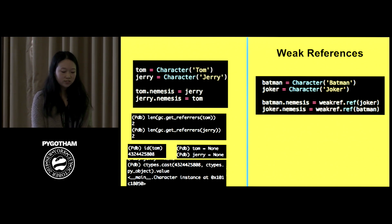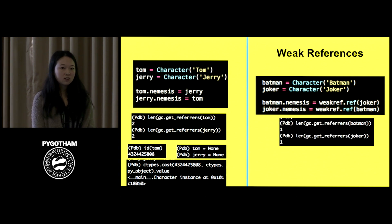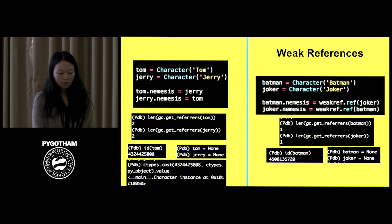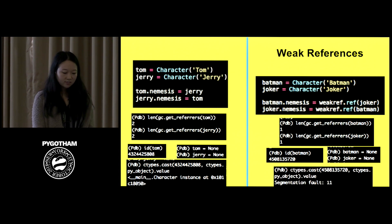If you want to manually remove this reference cycle, you can kind of change your program a bit or you can use something called a weak reference. And a weak reference will basically make it so the reference count doesn't increase even when you assign it to something. So for instance, if I did sort of a similar example using Batman and Joker, but when I assign them to each other's nemesis using weakref.ref, you can see if I use the get_referrers method now, there's only one reference to Batman and Joker, not two. And once again, if I remove them from my program and I check Batman's memory location, instead of a character instance, now I get a segmentation fault, which is what happens when Python tries to access a memory that it can't reach.